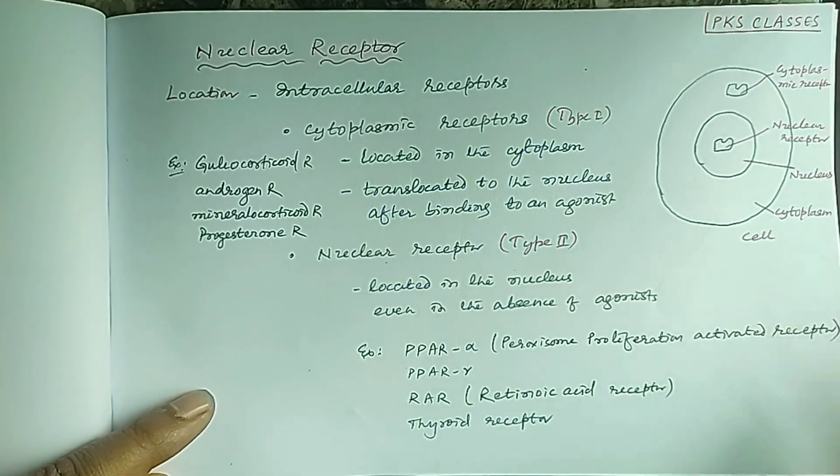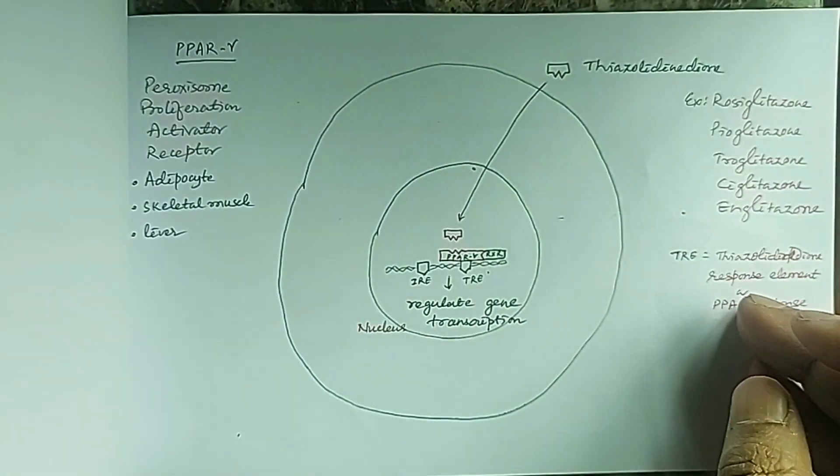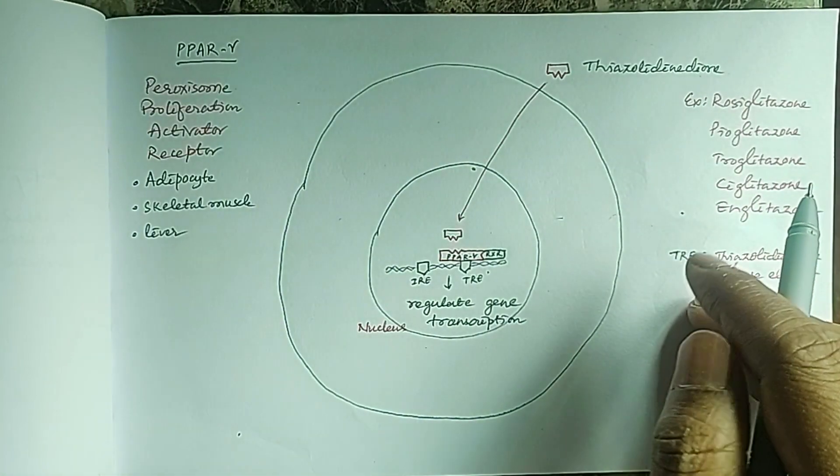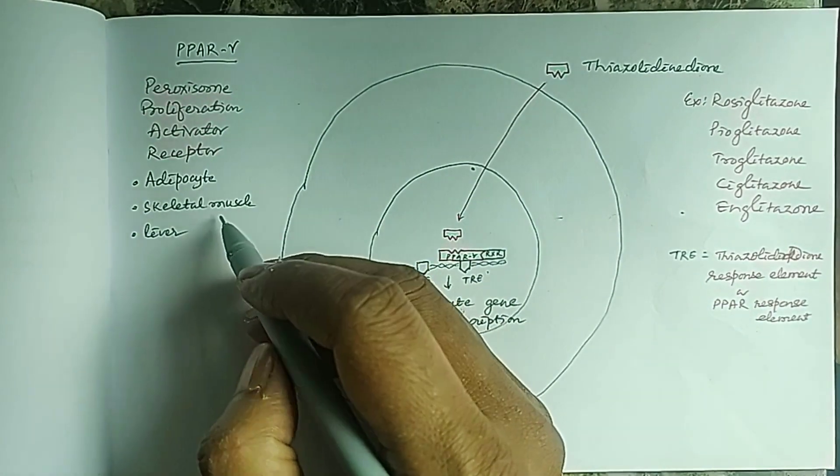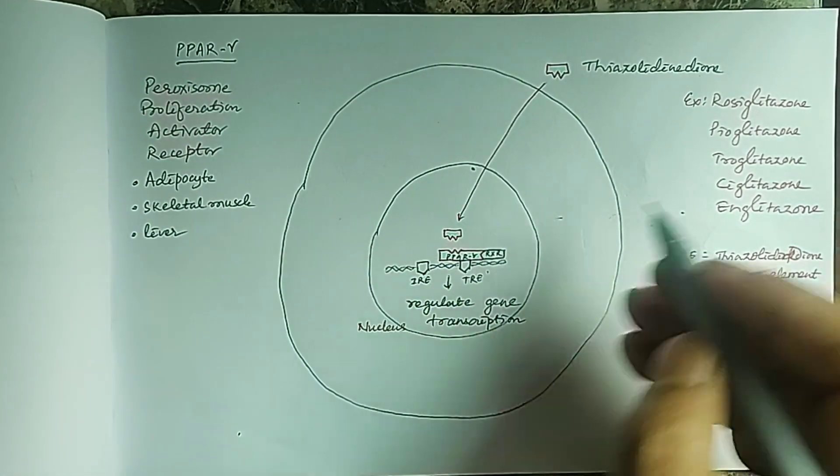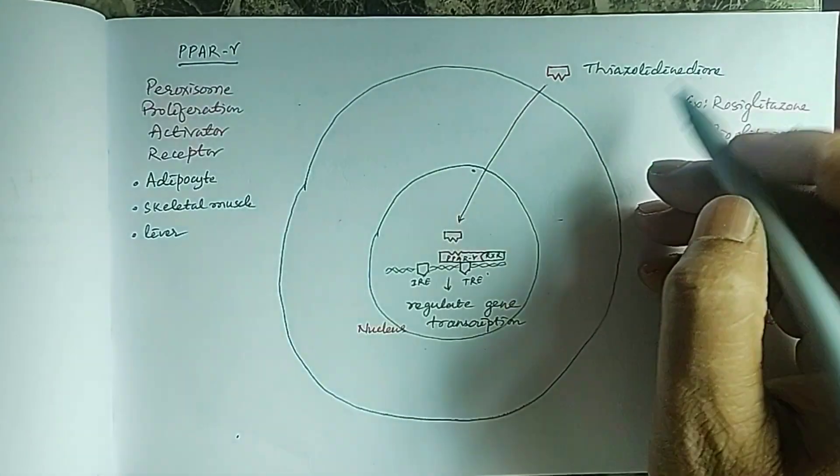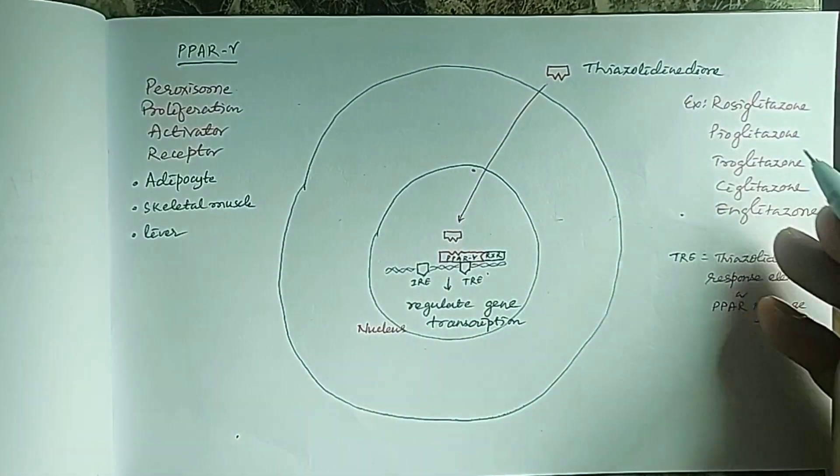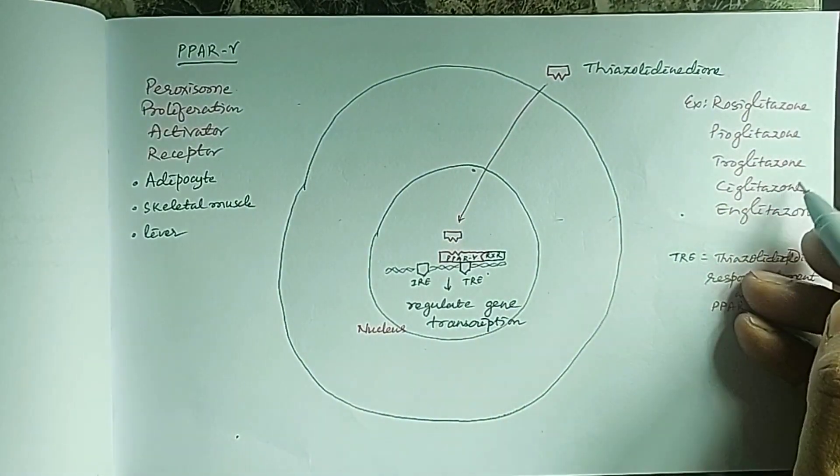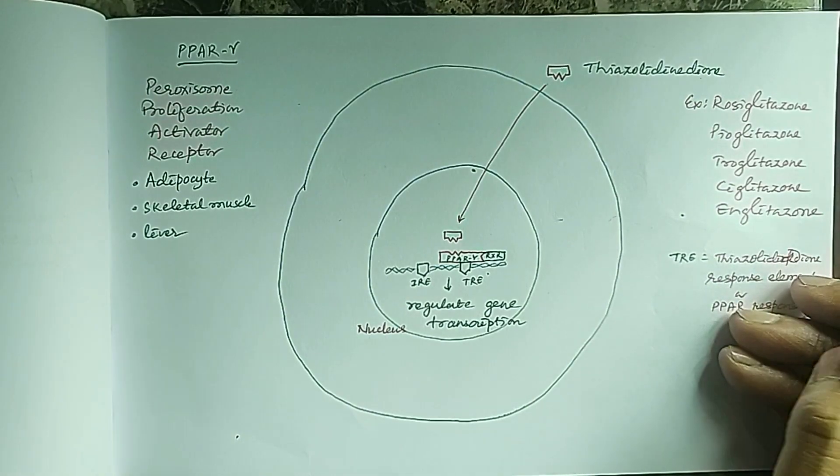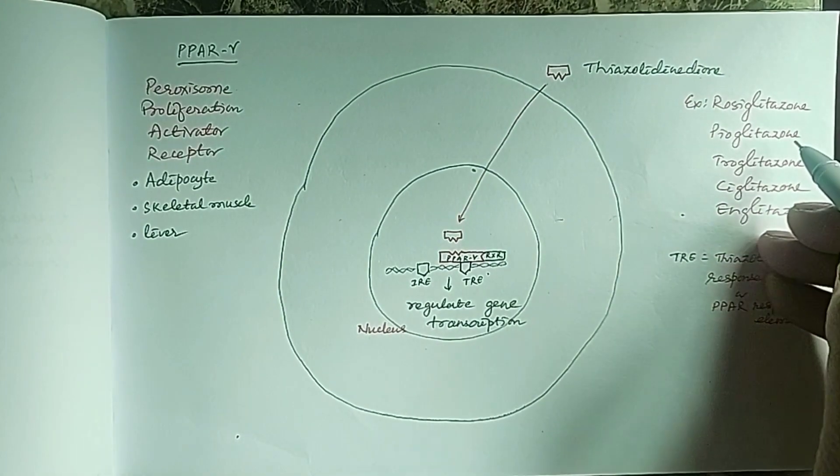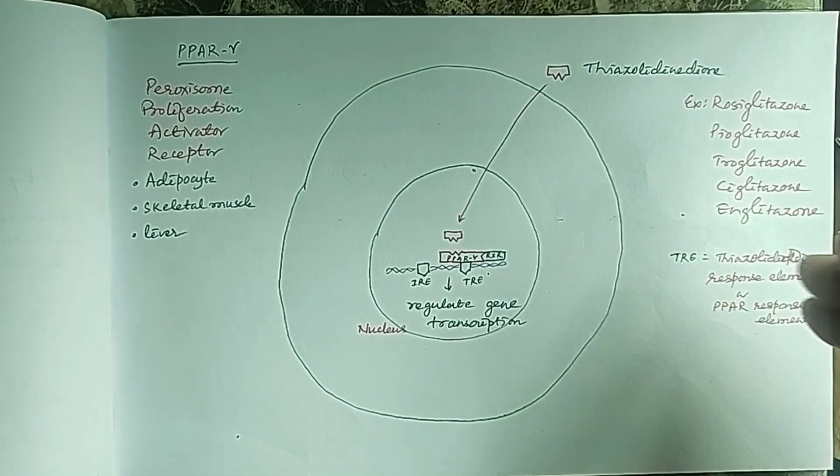We are discussing PPAR gamma-2, which is located in the adipocytes, skeletal muscles, and liver. The agonist of PPAR gamma is thiazolidinediones like rosiglitazone, pioglitazone, troglitazone, ciglitazone, and englitazone. These are anti-diabetic drugs used in insulin resistance.